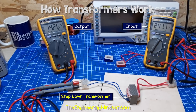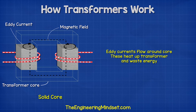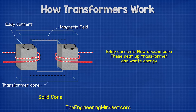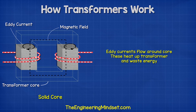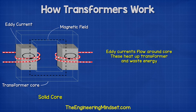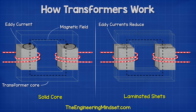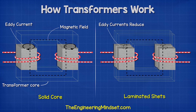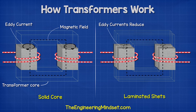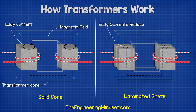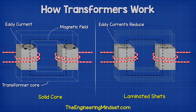However, this is not a perfect solution. It will result in eddy currents flowing around the core, which will heat up the transformer and therefore waste energy. To reduce this, the core is made of lots of thin laminated sheets, which restricts the eddy current movements and reduces their effects.